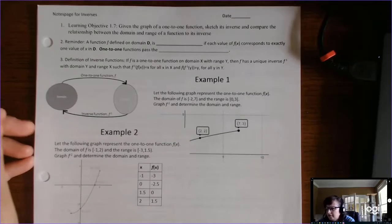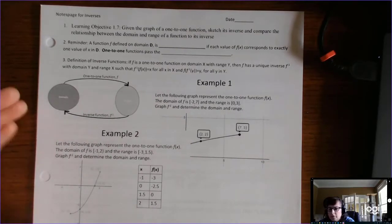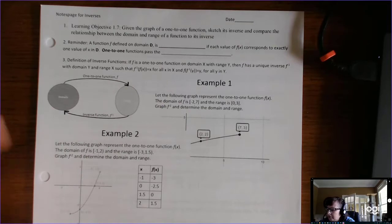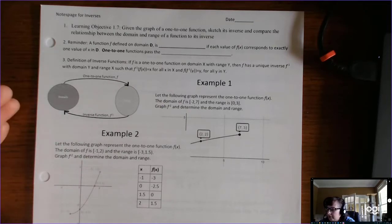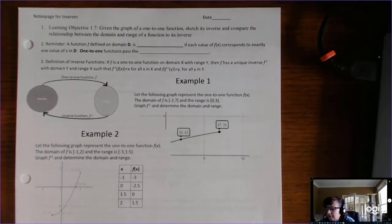This is the notes page for inverses for unit 1, where we look at the graphical method and go over some definitions that we'll return to in the next unit.